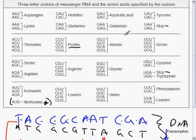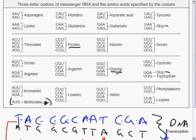Looking closely at the redundancy, the code is grouped. With proline, if you start off with two C's, it doesn't matter what the last base is — it's all proline. Same with glycine: if you start off with two G's, you get glycine. This has caused some biologists to theorize that the original code was actually two bases — perhaps only 16 amino acids made up early organisms. As organisms evolved, they duplicated some codes, and others like histidine and glutamine were able to separate into two distinct amino acids.